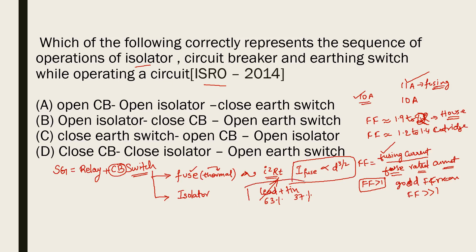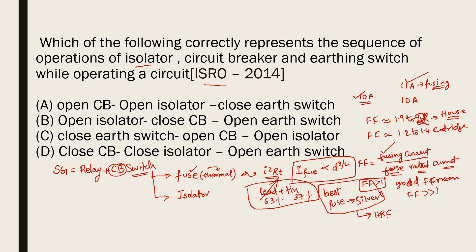Lead-plus-tin alloy is the generally used fusing element. If asked in an exam what the best fuse element is, the answer is silver. There is a type called HRC fuse — High Rupturing Capacity fuse — in which the fusing element used is silver. An HRC fuse is a very high-capacity fuse compared to a normal rewirable fuse.